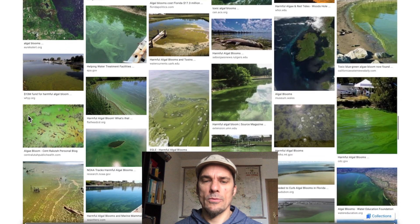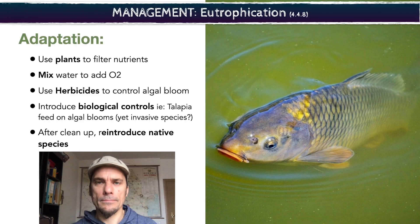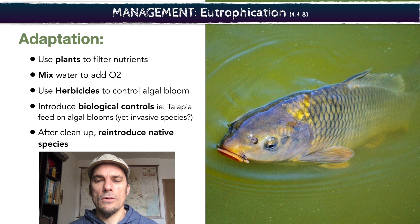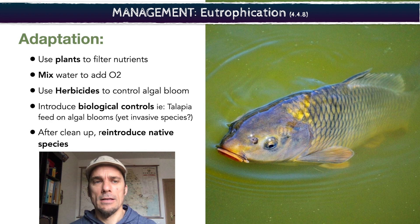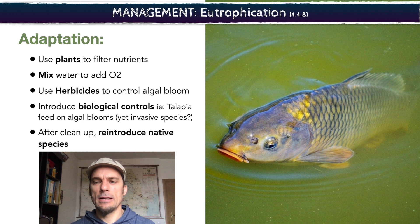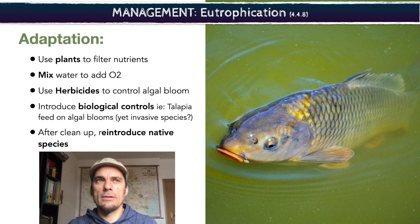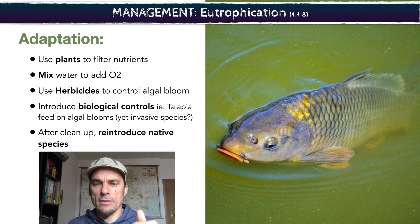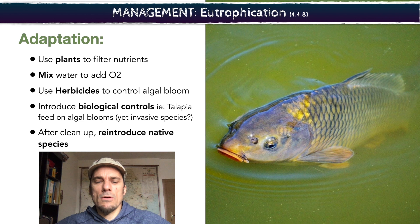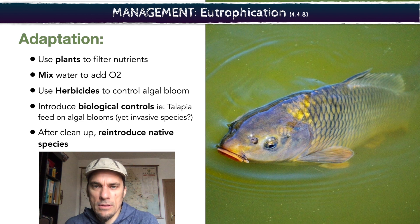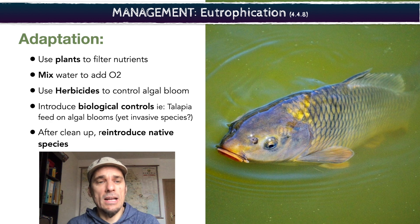Now let's look at how we deal with eutrophication when it's already happening. Plants can be implemented along the edges of farms to suck up nitrogen and phosphate nutrients. Low dams in streams can aerate the water — adding oxygen — which keeps the water oxygenated for organisms living inside it. As the algae blooms, grows, dies, falls down, and decays, that process pulls a lot of oxygen out, killing it for other organisms. So by aerating the water, we help that problem.